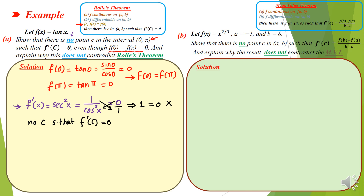Students often see that f(a) = f(b) and conclude Rolle's Theorem applies and there exists such a C, but this is not true. You must check continuity and differentiability to guarantee there is a C in the given interval that makes the derivative equal to 0.